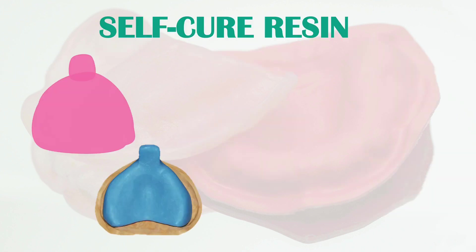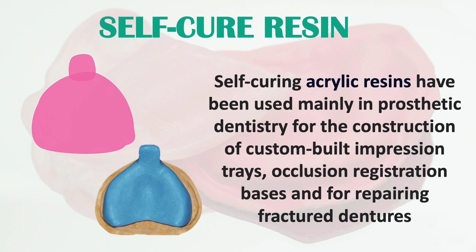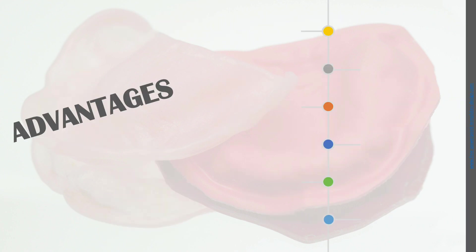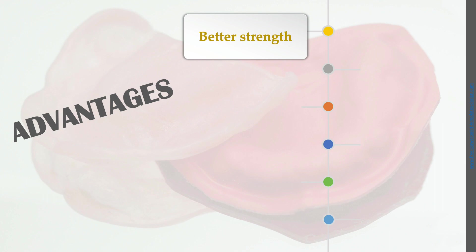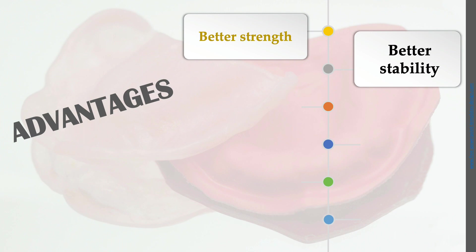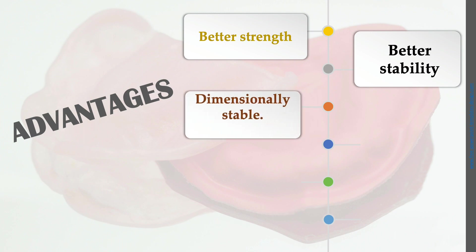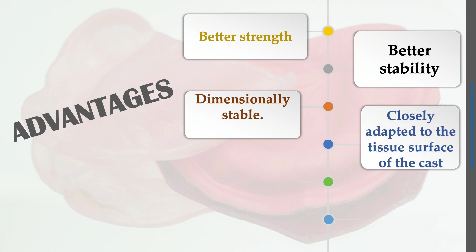Self-cure resin is the most commonly used material for fabrication of custom trays, special trays, and record bases. Self-cure acrylic resin is used in prosthetic dentistry for construction of custom impression trays, occlusal registration bases, and for repairing fractured dentures. It has better strength, does not distort when hardened, and is dimensionally more stable than the shellac record base.